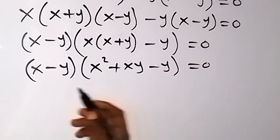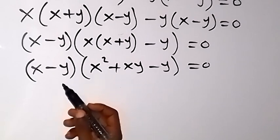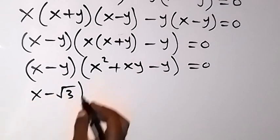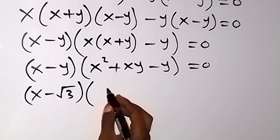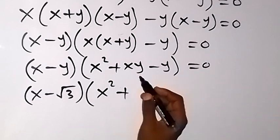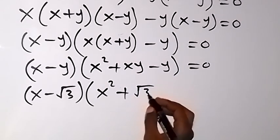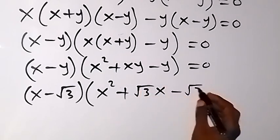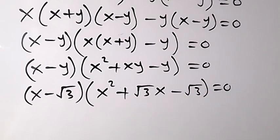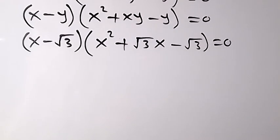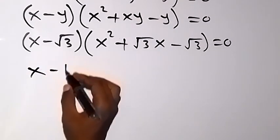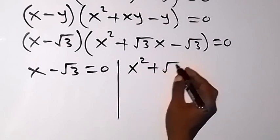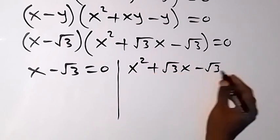So from here we can substitute back the value of y. Y is the same thing as root 3, and we can write it as (x minus root 3), then multiply by (x squared plus x times root 3 — that's the same thing as root 3x — because y is now root 3), then minus root 3 equals to 0. So we have two solutions from here: x minus root 3 equals to 0, or x squared plus root 3x minus root 3 equals to 0.